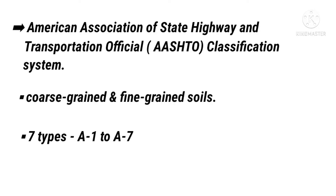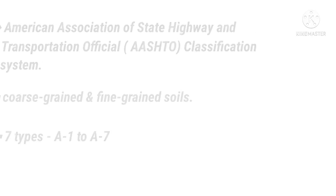The seven soil types are designated as A1 to A7. The soils A1 and A7 are further divided into two categories each, and the soil A2 is divided into four categories, as shown in this table.